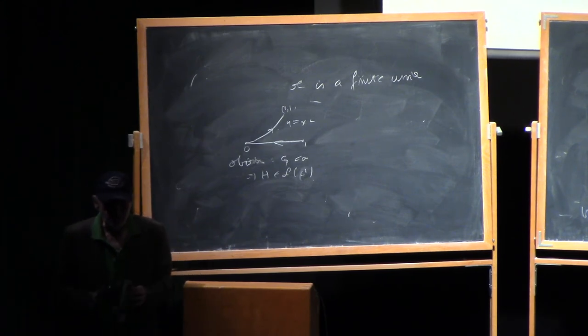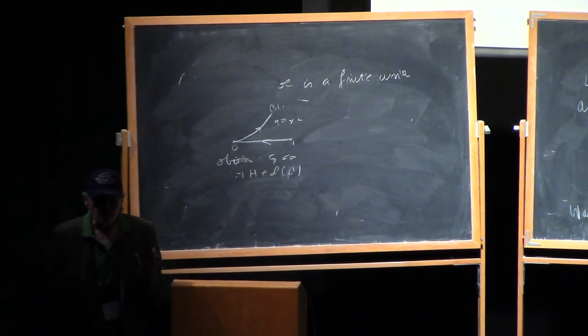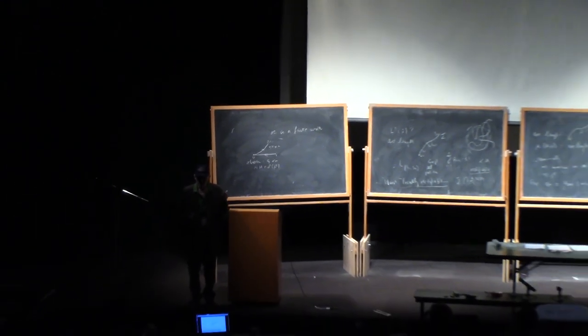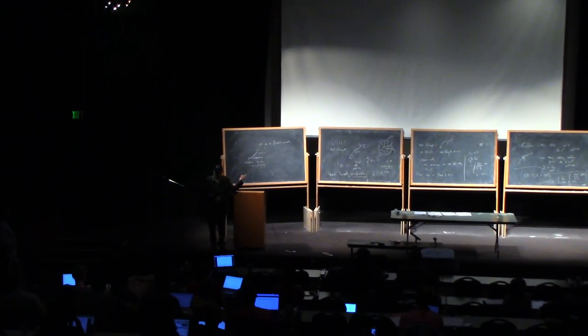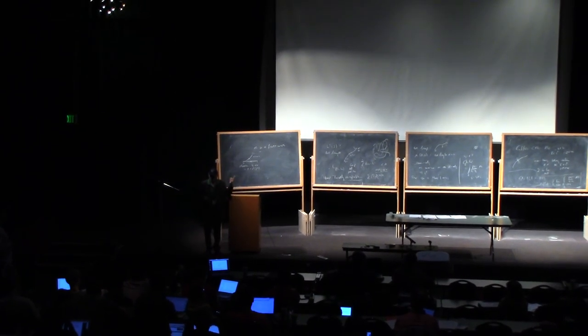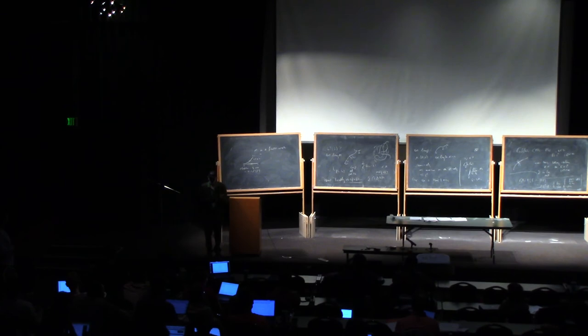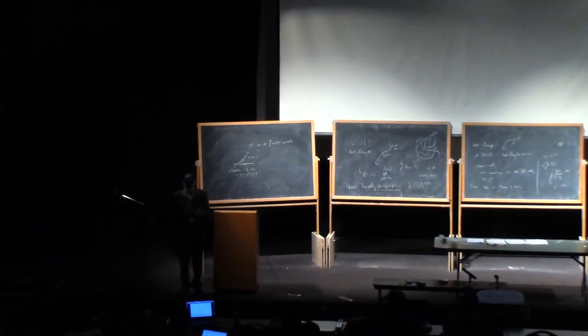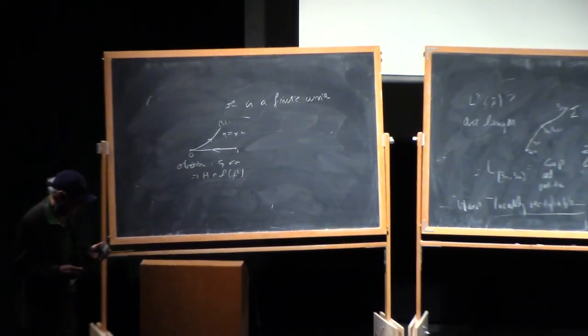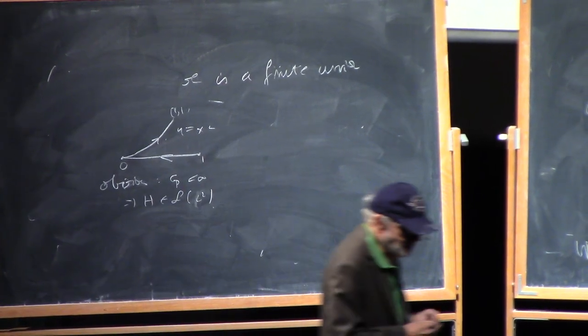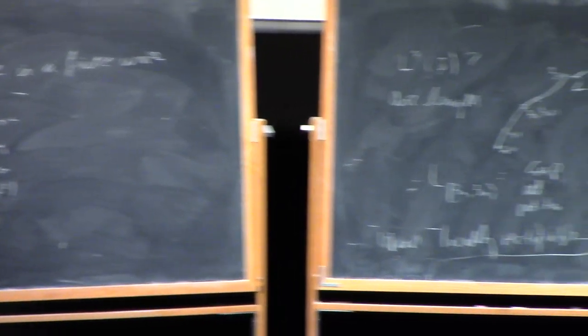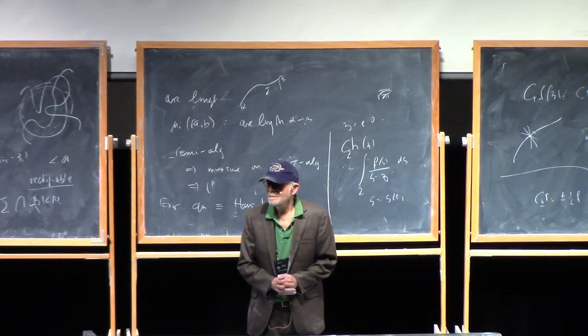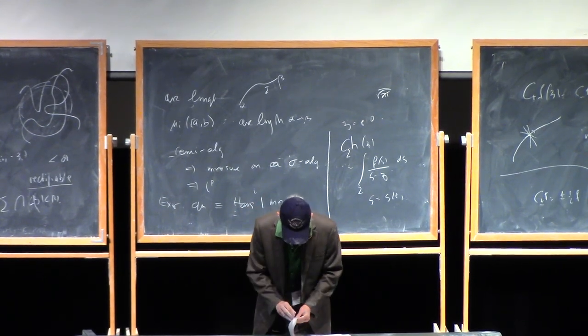Finish off with the following comment. A Riemann-Hilbert problem is going to be something which takes place on an oriented composed contour, each of whose arcs have a finite C gamma. And such arcs are called Carlson curves. So Riemann-Hilbert problems take place naturally on composed curves, each of whose arcs is a Carlson curve. Thank you. Any quick question for Percy? No. So let's thank Percy again.